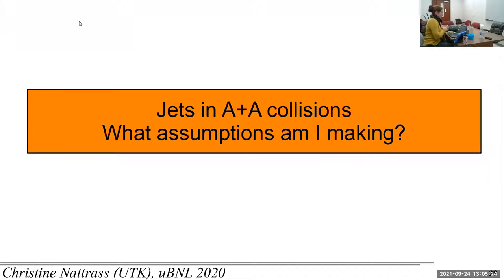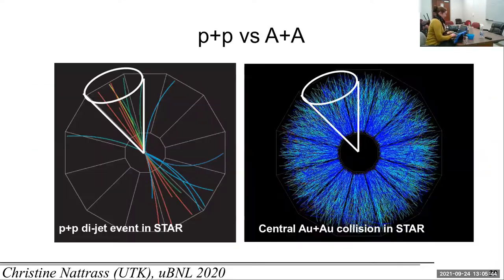I've already started with a somewhat convoluted definition in proton-proton collisions where my observable is what I get out of a jet finder, and then I'm going to put this already complicated observable into a heavy ion collision. What you see here is an event display of a jet in proton-proton collisions in the STAR experiment, and you see this is a di-jet event, which is the most common type of event with jets. You can at least kind of see that there's two back-to-back jets, and then you're going to put it in this mess.